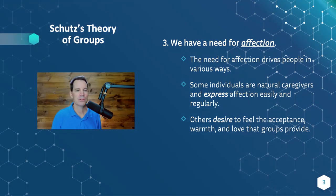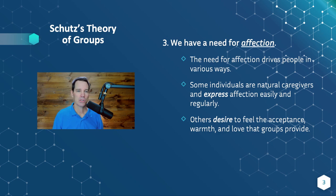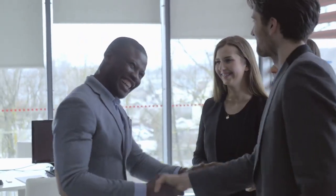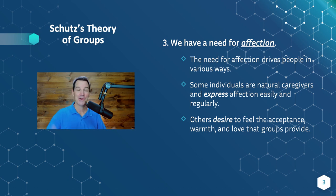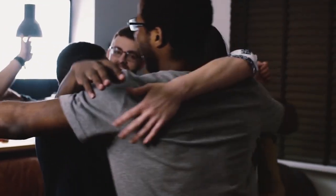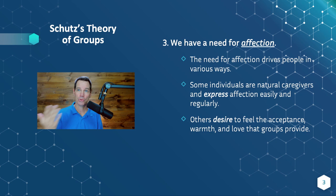The third need is that we all have a need for affection. That drives us in various ways to be around other people and receive affection in some way. Some people are natural caregivers who express lots of affection easily. Other people will sit back, and even though they desire it, they'll wait for someone else to break the ice and express affection to them. Some people are just natural huggers — if they see you, their arms go up and they're ready to express that affection. Other people will enjoy receiving a hug but they're not the one to break the ice. Just like the other variables, some people are more likely to express this and some people will sit back and just desire it.